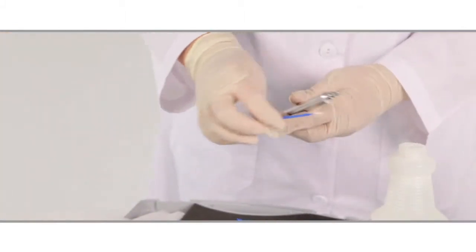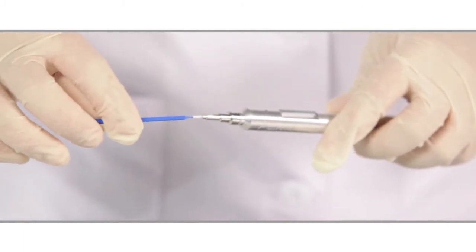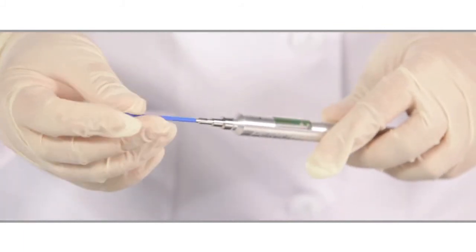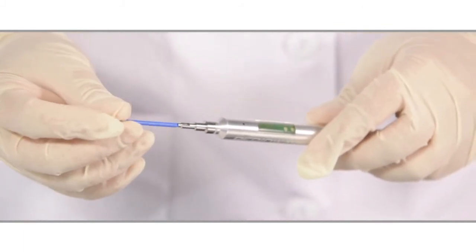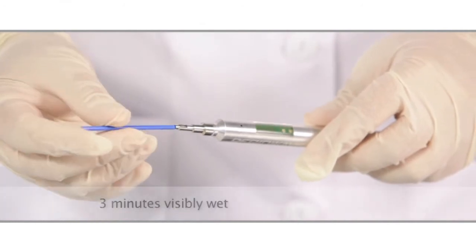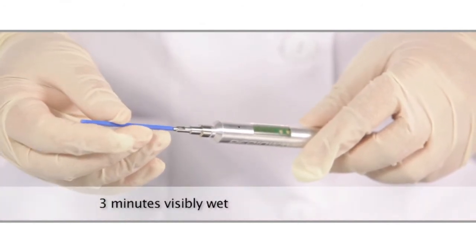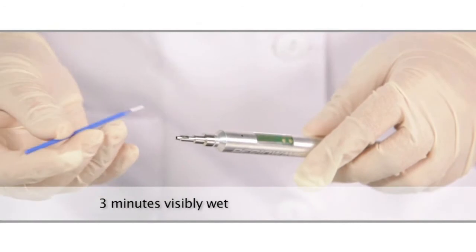Dip the optical cleaning swab into the Cavicide and insert the cleaning swab directly into the tube. Rotate the swab to cover the entire surface area of the lens and tube. Allow the surfaces to remain visibly wet for at least three minutes.